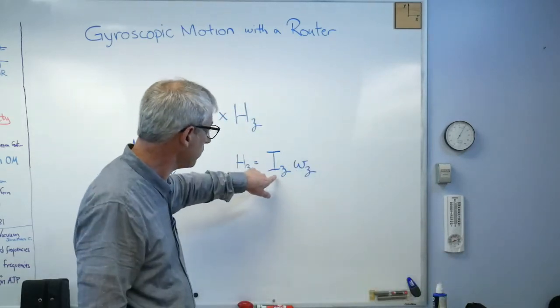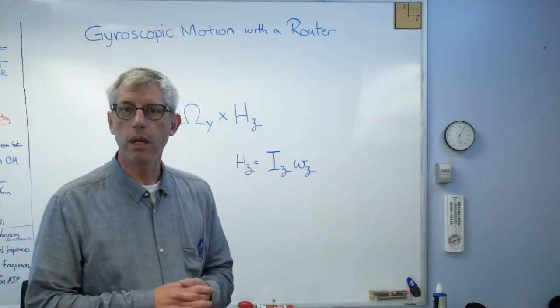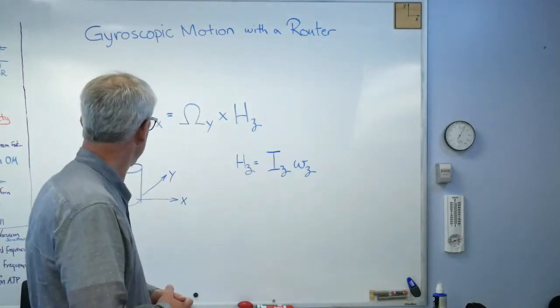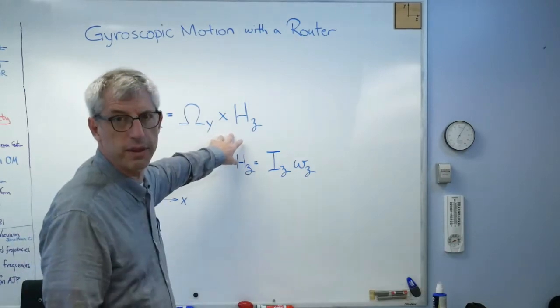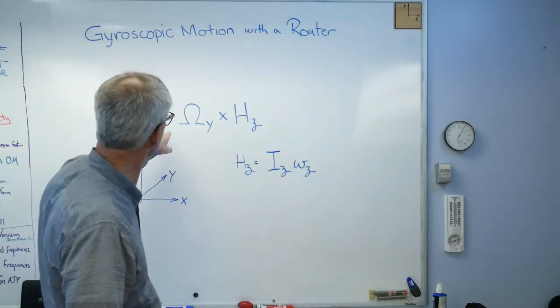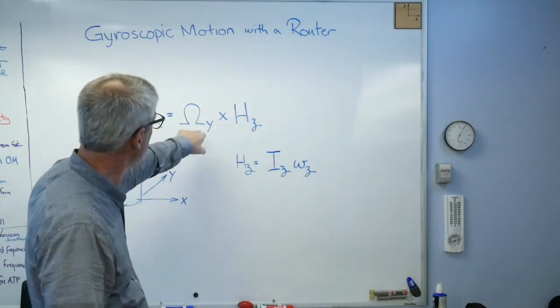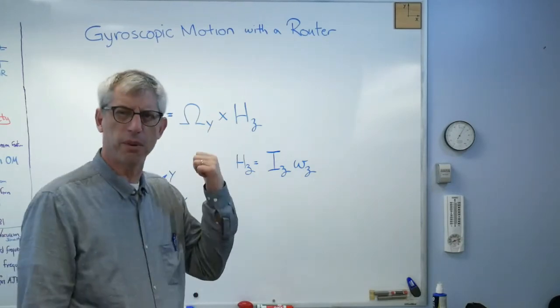The angular momentum is the mass moment of inertia times the speed in radians per second. That's a vector cross product, and what this is saying is you get a moment perpendicular to those two. That's what it says.